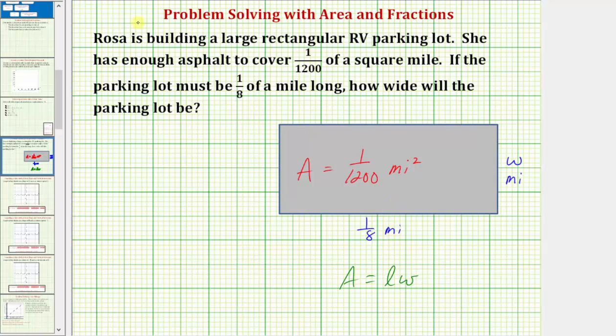So because the length is 1/8 of a mile, we'd have the equation 1/8 times the width, which is unknown, it's W miles. So we have times W must equal the area, which is 1/1200th of a square mile. So we have equals one over 1,200.